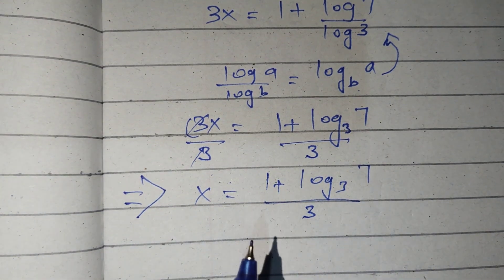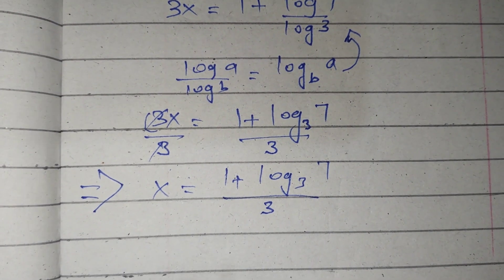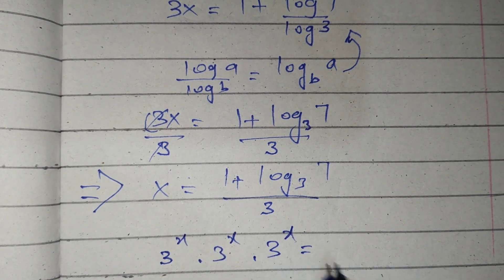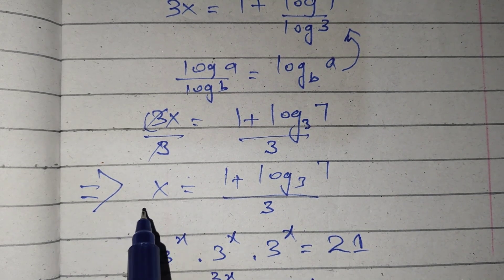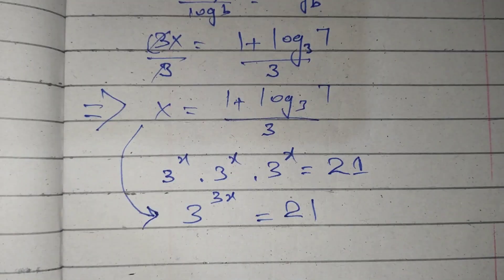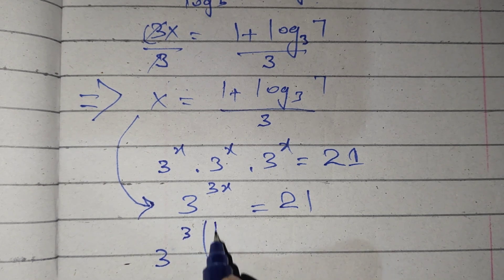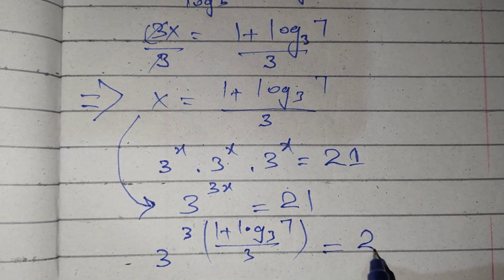Now we will put this value back into our question to verify our answer is correct. Our question is 3 raised to the power x, times 3 raised to the power x, times 3 raised to the power x, equals 21. It can be written as 3 raised to the power 3x equals 21. Substituting, it becomes 3 raised to the power 3 times (1 plus log base 3 of 7) divided by 3 equals 21.